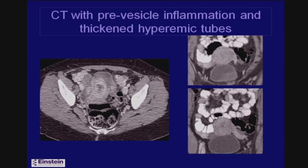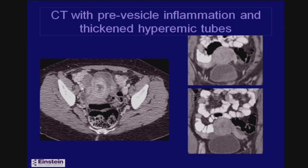CT is not uncommonly ordered in these patients, not as the primary diagnostic modality, but because it is used frequently in the emergency room when physicians consider appendicitis or diverticulitis. On CT you can see the uterus, and brightly enhancing curvilinear tube-like structures are the fallopian tubes — not dilated per se but enhancing brightly, corresponding to the hyperemia seen on ultrasound.